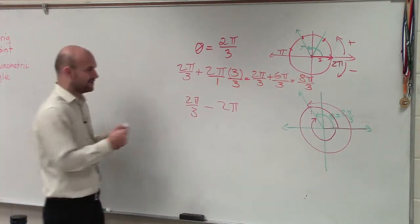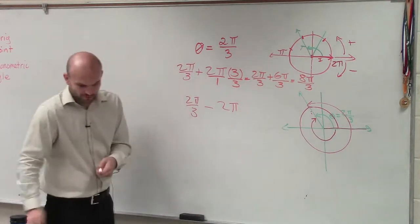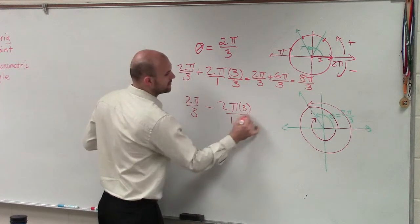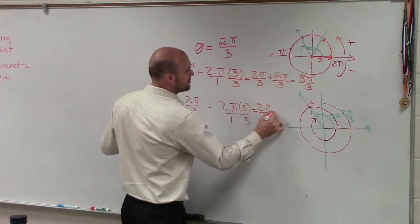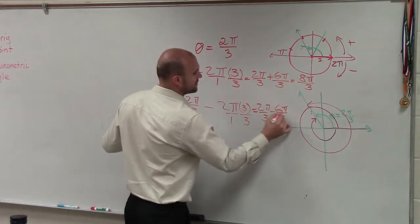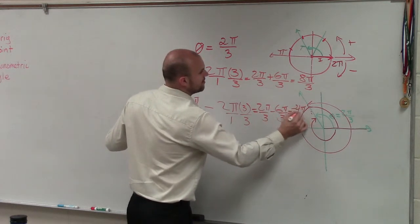So anyways, now we go and rewrite this. So I put that over 1, multiply by 3 over 3. Therefore, what I have is 2 pi over 3 minus 6 pi over 3, which equals negative 4 pi over 3.